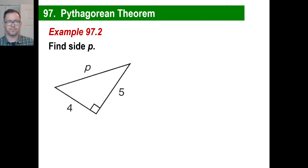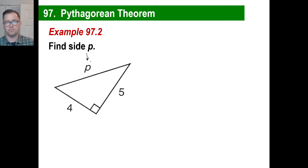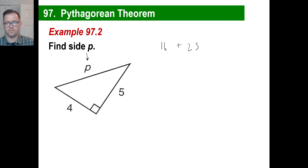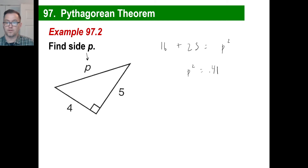Alright, find side P. We'll use the Pythagorean theorem again. It doesn't matter which one is A or B, as long as the hypotenuse is C — you can call it P. So A squared is 16, plus B squared is five times five, which is 25, equals P squared. 16 plus 25 is 41. P squared is 41, so P is the square root of 41, which is somewhere between six and seven. You can leave it like that, or use a calculator if you need a decimal — like if you're measuring fencing for your yard.